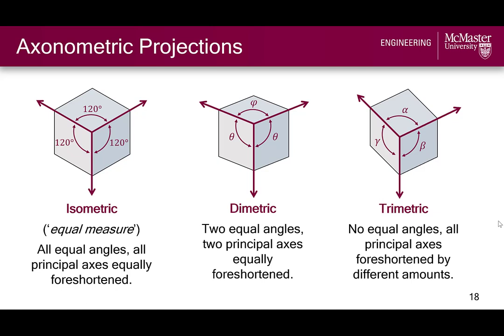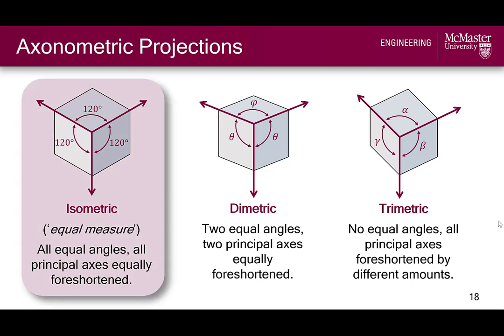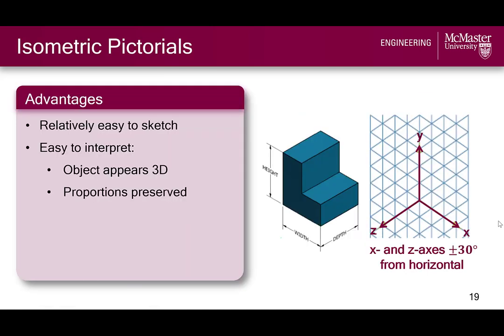With isometric pictorials, all three axes are equally foreshortened, which preserves the relative proportions in all dimensions. This is why isometrics are commonly used in CAD and why we will focus on isometric pictorials in this course. Since all axes are equally foreshortened in an isometric pictorial, the height, width, and depth proportions are preserved for easy sketching and interpretation. To sketch an isometric pictorial, an isometric underlay can be used or drawn by hand as a guide — essentially a 3D grid paper with the X and Z dimensions directed up at 30 degrees from the horizontal and the Y dimension directed vertically.